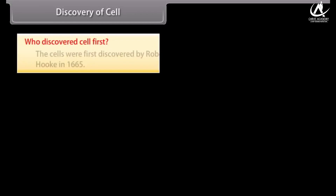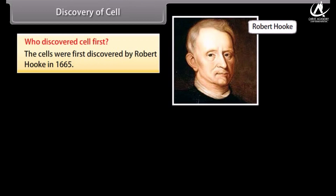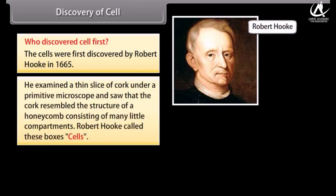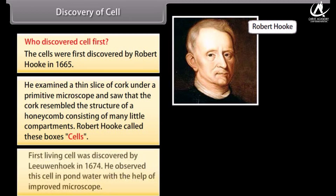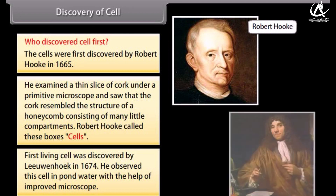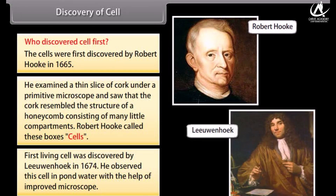Discovery of cell: Cells were first discovered by Robert Hooke in 1665. He examined a thin slice of cork under a primitive microscope and saw that the cork resembled the structure of a honeycomb, consisting of many little compartments. Robert Hooke called these boxes 'cells'. The first living cell was discovered by Leeuwenhoek in 1674. He observed this cell in pond water with the help of an improved microscope.